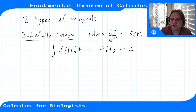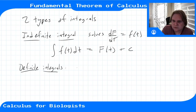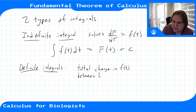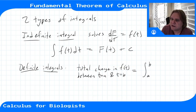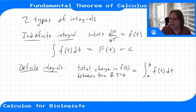The initial condition is used to find that constant of integration. A definite integral, on the other hand, describes the total change in a function — the total change in F(t) between t = a and t = b. It looks the same as an indefinite integral but has two bounds a and b on the integration sign, this curly S.